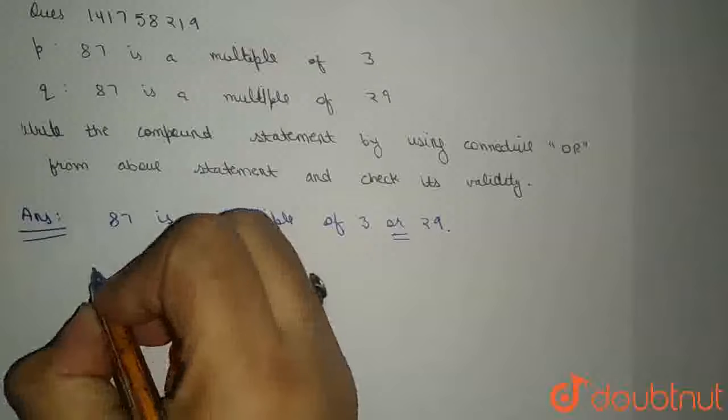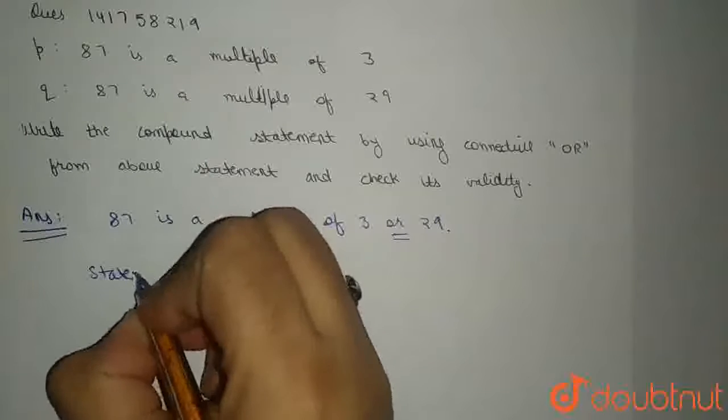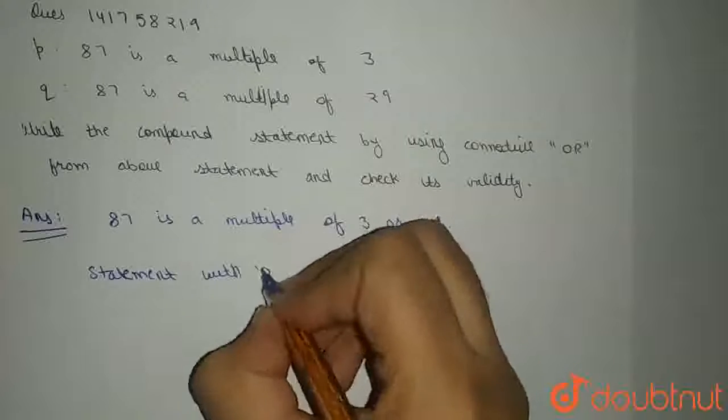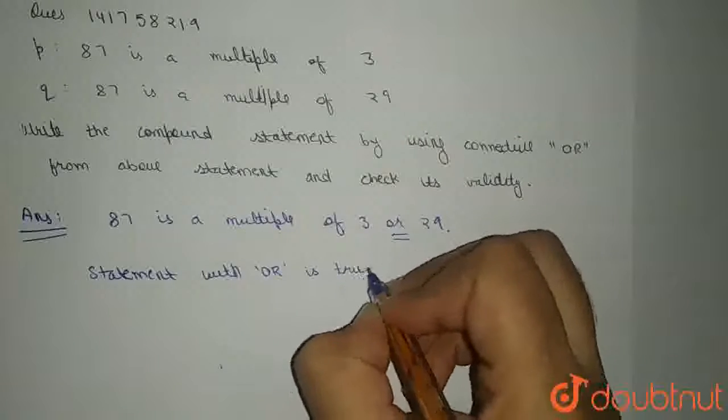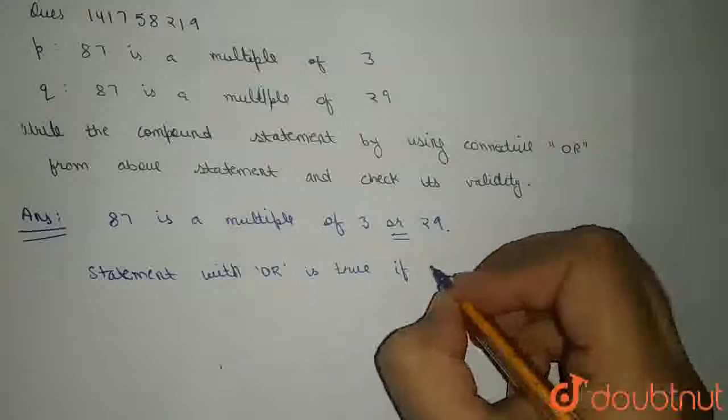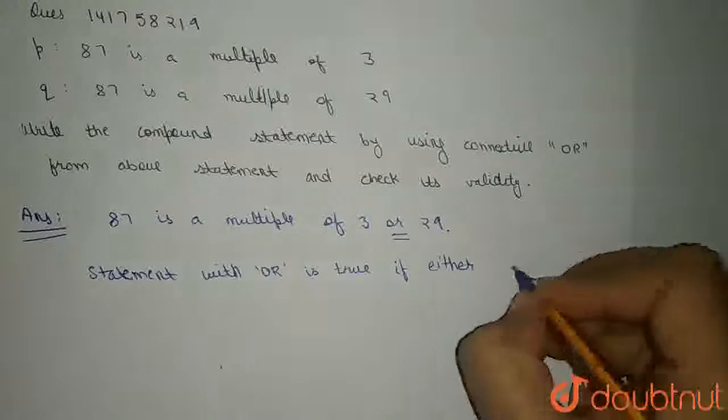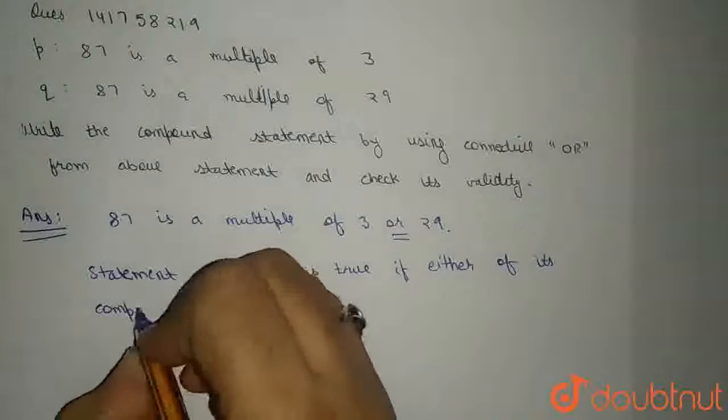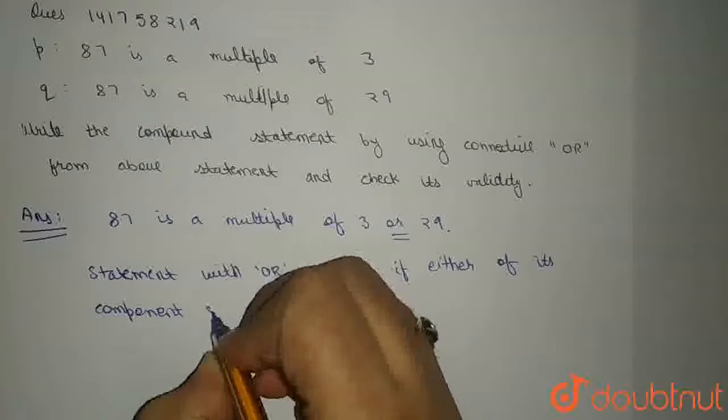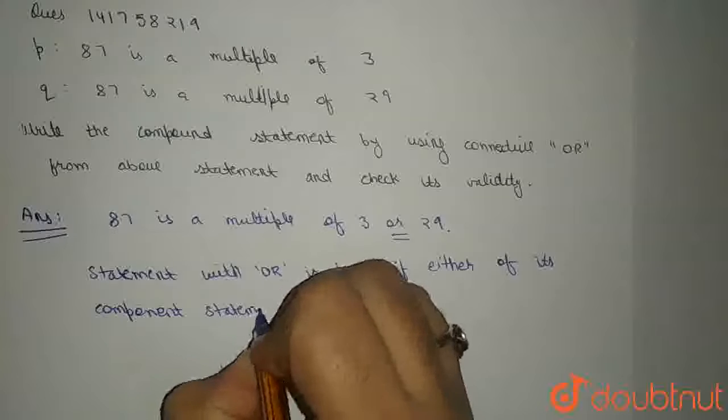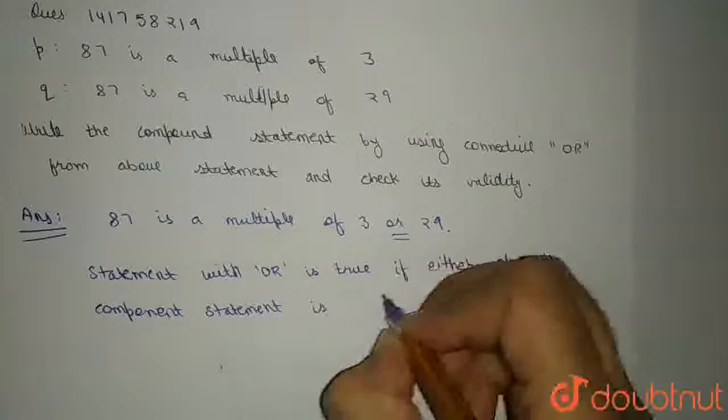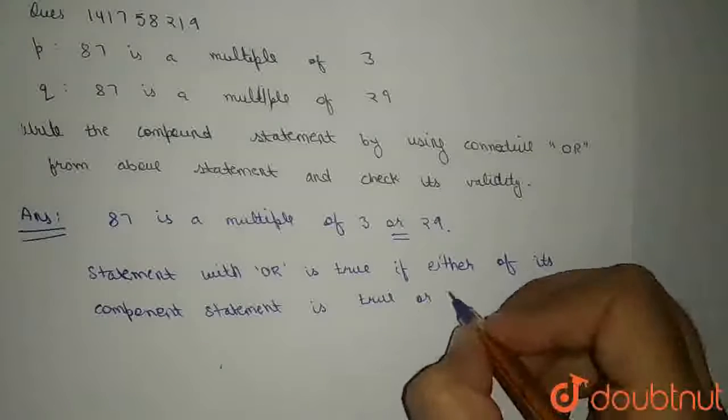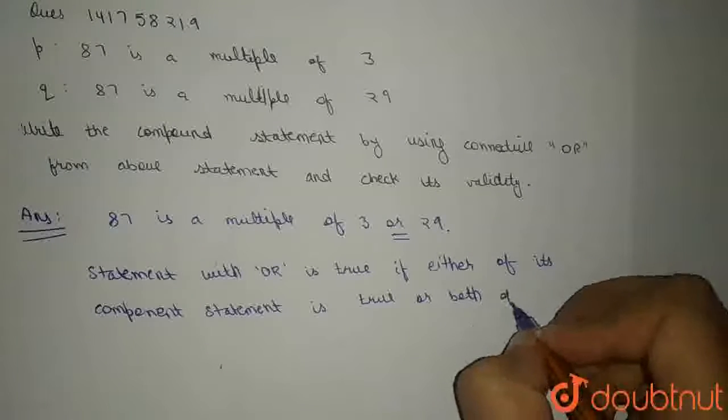Statement जो OR से connected होते हैं, वो कब true होते हैं? वो होते हैं when either of the component statement is true, और both हा true. तो मतलब उन में से कोई एक भी true हो गया, तो भी एक पूरा compound statement true होगा. Statement with OR is true if either of the component statement is true, और both the component statements are true together.